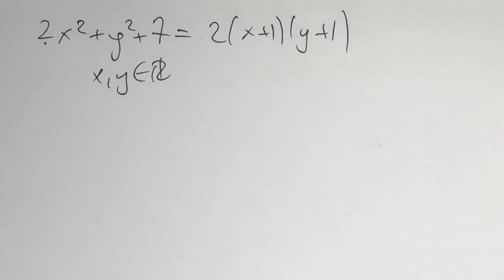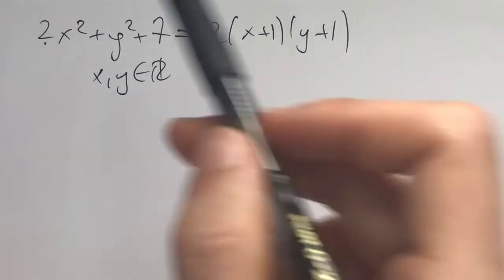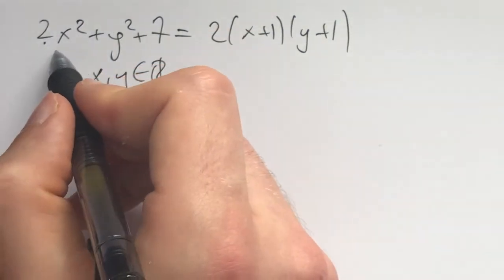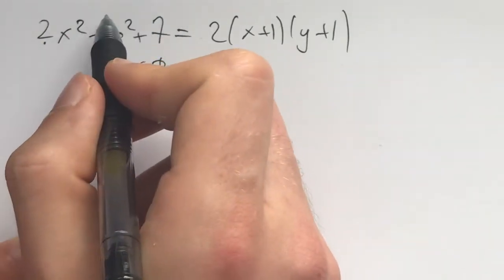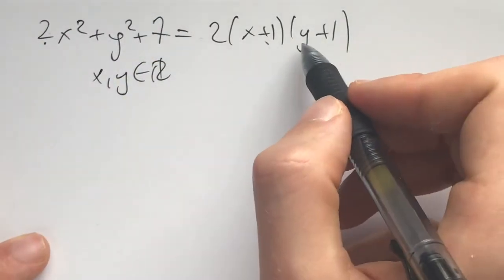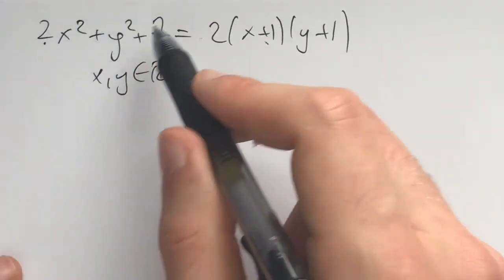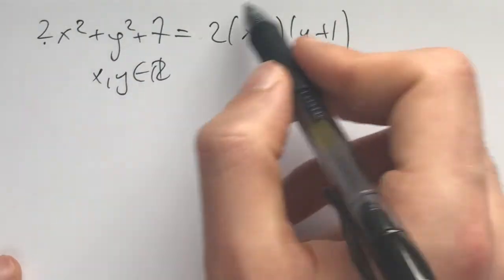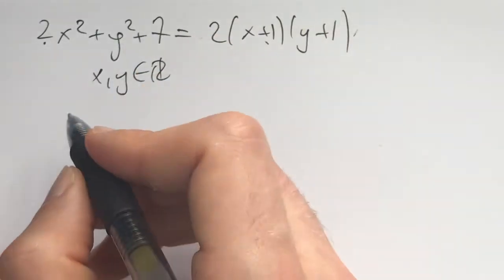Other times it's about finding a family of solutions through algebraic manipulations. But for this problem my thinking is I have x squared, y squared and 7 on this side and I have x times y, 2x, 2y. It seems this side is bigger than this side. So let me multiply everything out and move them here.